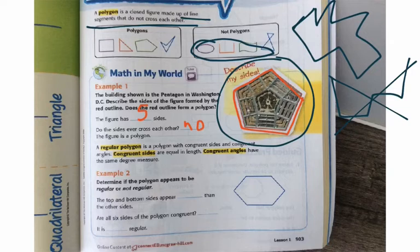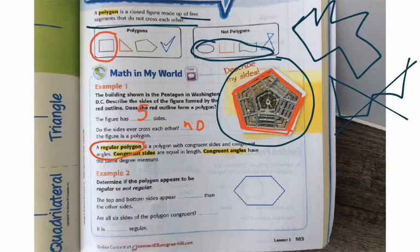Now once we know if it's a polygon or not a polygon, we need to focus on regular and irregular. Regular means that all of the sides on that shape are the same length. So each side would have to be the same length for it to be a regular polygon. For example, right here, that's a regular polygon. This one is an irregular polygon because the sides are different lengths.